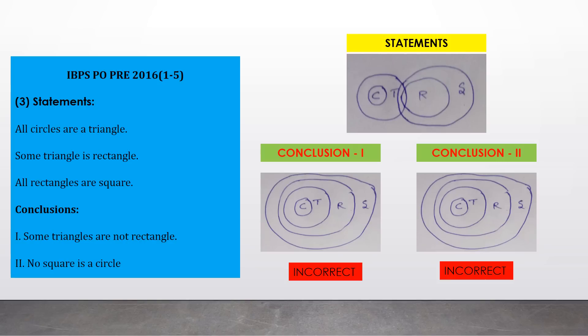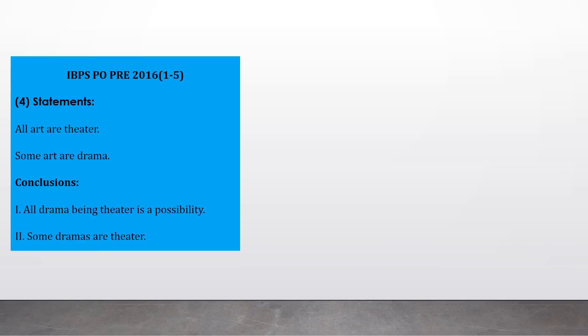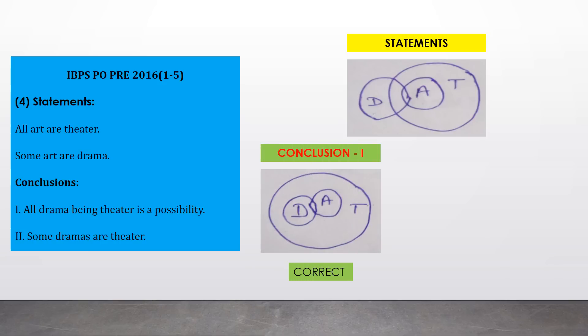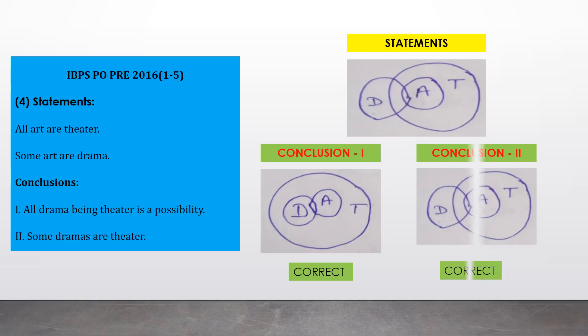Question 4 — Statements: all arts are theater, some arts are drama. Conclusion one — 'all drama being theater is a possibility': draw complete D inside T, then check — 'all arts are theater' — draw A inside T; 'some arts are drama' — add overlap between A and D. No contradiction, so this possibility is correct. Conclusion two — 'some dramas are theater': since all arts are inside theater and some arts overlap with drama, that overlapping portion of drama will always be inside theater. So some drama will definitely be theater — this is also correct. Answer: option E.